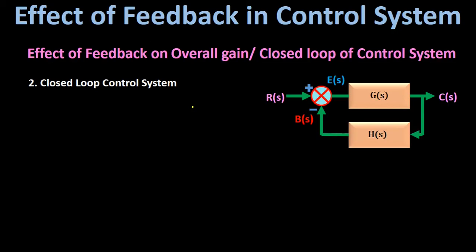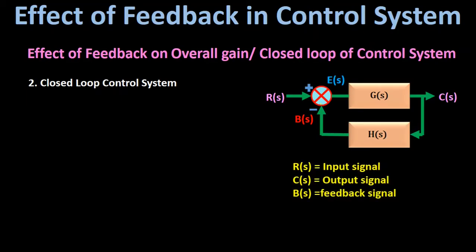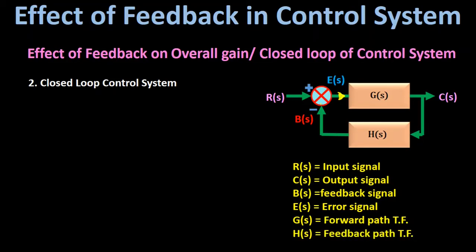Now we will take the closed loop control system. This is the block diagram representation of a negative feedback control system. Here R(s) is the input signal, C(s) is the output signal, B(s) is the feedback signal, E(s) is the error signal, G(s) is the forward path transfer function, and H(s) is the feedback path transfer function. From the diagram, the input to the feedback block is C(s) and the output is B(s), so B(s)/C(s) = H(s).